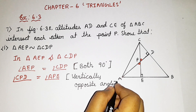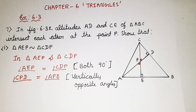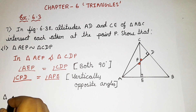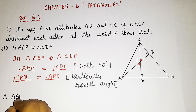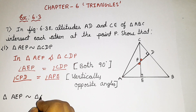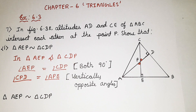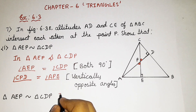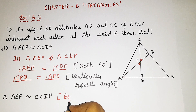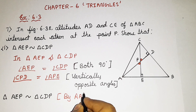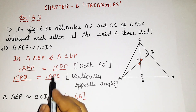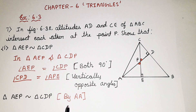Since we got two angles equal, I can say triangle AEP is similar to triangle CDP by the AA criterion. By AA criterion it is similar — since I got two angles, I have proved it is similar.